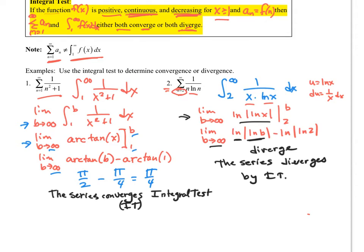Why does this one start at 2? Well, if we start at 1, that would have ln 0 in the denominator. We really can't do that. That would be undefined. Also, when taking this integral, that wouldn't work either. So we'd have problems with that as well.